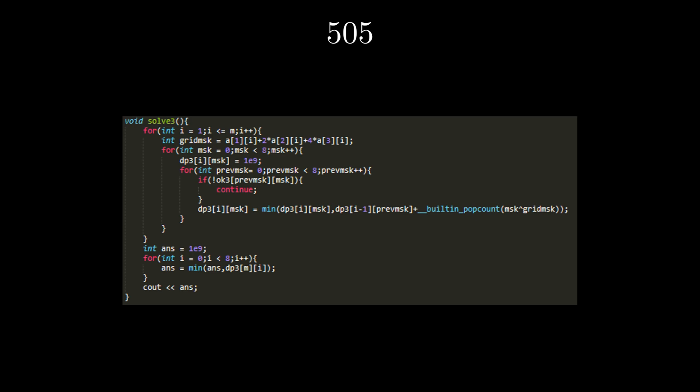Then, we start iterating over what the mask in the i-1 column could be. We keep these pre-computed in a table called ok3, where ok3[i][j] is true if the mask i can be placed in the column before mask j, or false otherwise. If ok3[previous_mask][mask] is false, we continue. Otherwise, we can transition over from dp3[i-1][previous_mask] and add the number of set bits in grid_mask XOR mask.